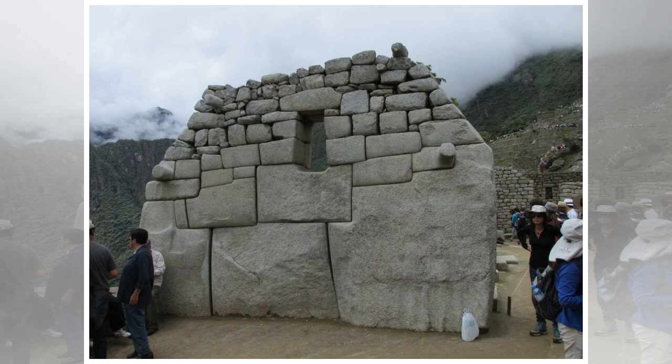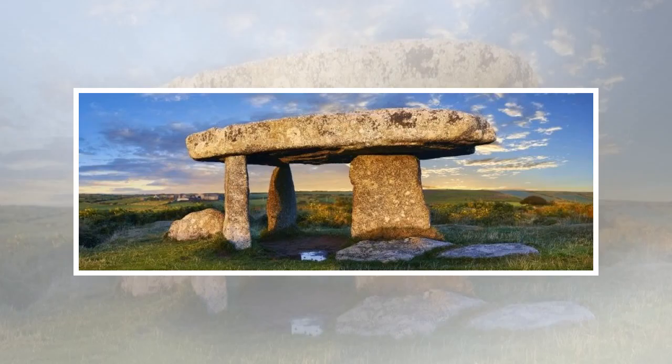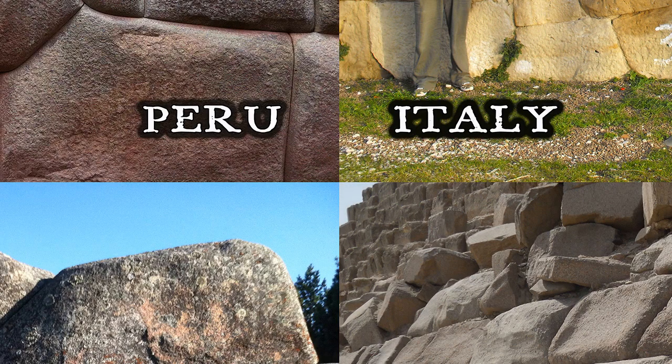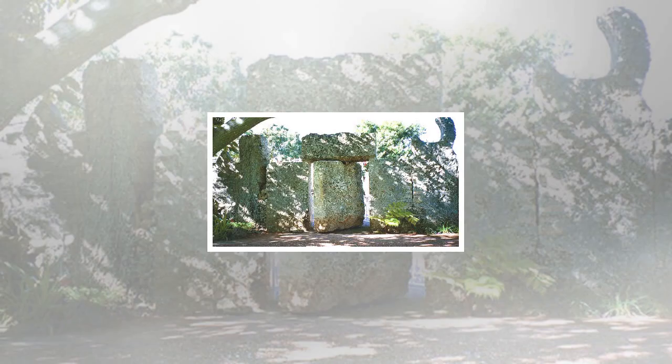To reverse engineer an object, it is necessary to have access so that we may do the opposite of building it — take it apart, break it down into its most basic components, and analyze them. But it's impossible to take anything apart without access. As virtually no one on the planet has access to the pyramids, virtually no one has any chance of proving them. Of the few archaeologists who do have access, they weren't permitted to take them apart until recently. Thus, no modern man could prove how they were built.